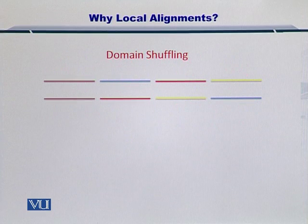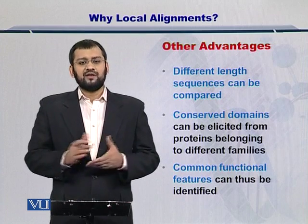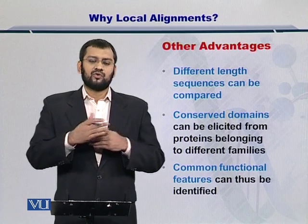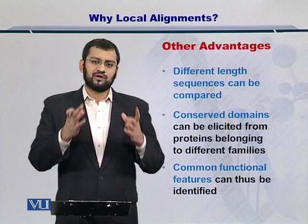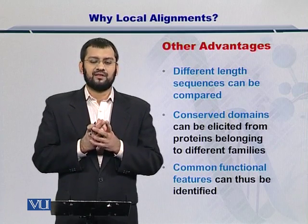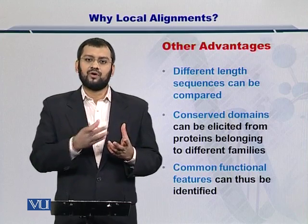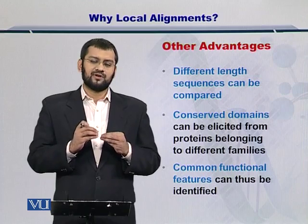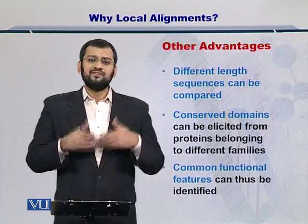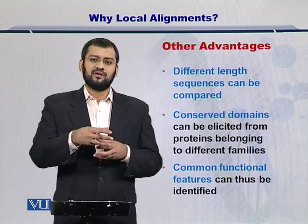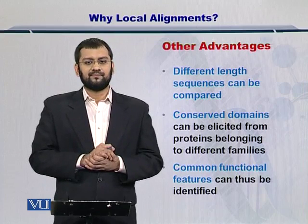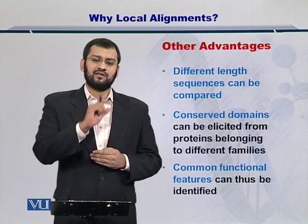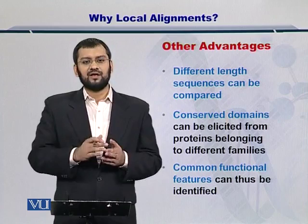This is of course not possible with a global alignment approach. Besides domain shuffling, there are several other advantages. Local alignments allow you to compare sequences of variable length. For global alignment you need two sequences that are exactly the same in length, but local alignments are very useful when one sequence is shorter or different in length from the other. Moreover, you can easily identify conserved domains between various sequences, and if domains are conserved between two sequences, you can expect their function will also be the same, because domains dictate the function of proteins.